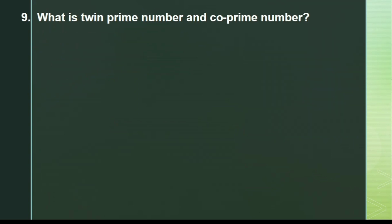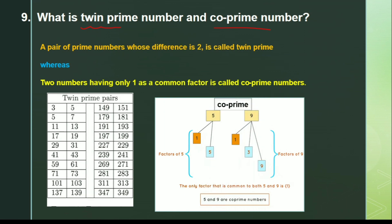Next question: what is a twin prime number and a co-prime number? Both are very different. A twin prime number is a pair of prime numbers whose difference is two. Co-prime numbers are two numbers having one as their only common factor. Everything is mentioned on screen — note it down. They won't ask tough questions but will ask simple conceptual ones.